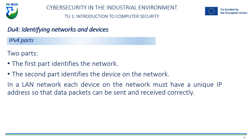Each IP address is divided into two parts: the first part identifies the network to which the device is connected, and the second part identifies the device on the network. The IP address can also be divided into four octets in the case of IPv4, or into eight groups of four hexadecimal digits separated by colons in the case of IPv6. Each octet or group of digits represents a numerical value from 0 to 255. In a LAN, the IP address of each device is usually assigned by the router or the DHCP (Dynamic Host Configuration Protocol) server. Each device on the network must have a unique IP address so that data packets can be sent and received correctly.